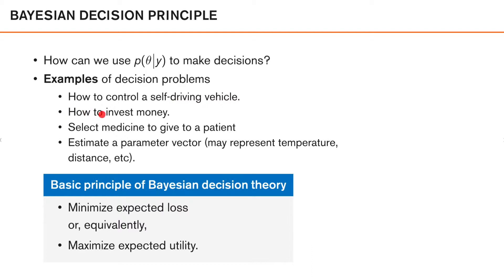It can also be how to invest money, both if you're running a company or as a private person. We can also look at selecting medicine to give to a patient if you're a doctor, or what estimate to give a parameter vector that could represent temperature, distance, or any other quantity of interest.